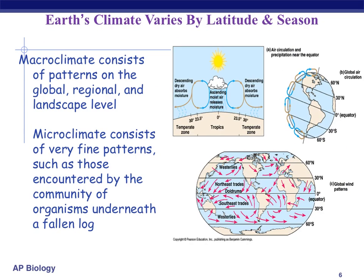Some other things that can influence the ecology of an area is the climate — and this is going to be an abiotic factor, because these factors aren't alive. Earth's climate changes depending on the latitude and the season. We can take climate and divide it into two big groups: microclimate and macroclimate. Macroclimate is all about patterns on a global and regional level. Whereas microclimate is all about fine weather patterns, such as those that a specific community of organisms would encounter. For example, when you overturn a rock, the climate those organisms experience would be microclimate. Whatever organisms you find within a rotten tree branch — the climate they're exposed to — that would be microclimate.